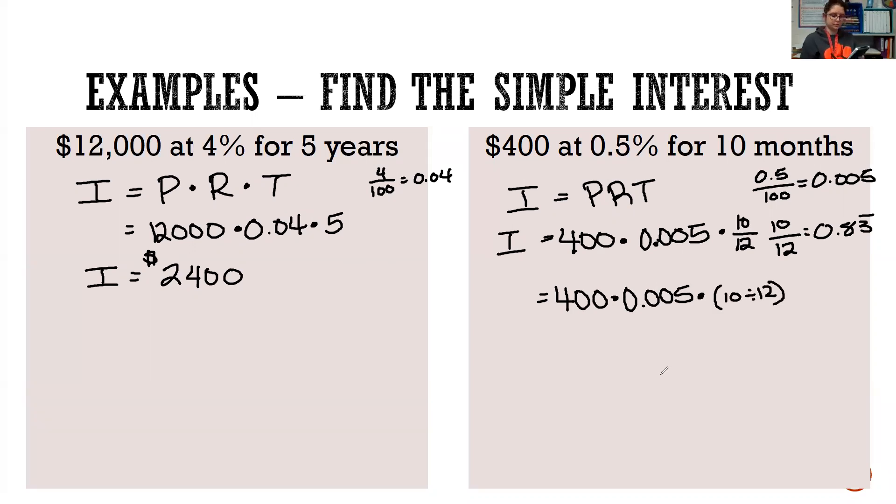And that will get you the same answer. So 400 times 0.005 times, I'm going to do 10 divided by 12. And so we see that our interest earned, if we invest $400 at a half a percent interest for 10 months is $1.67.